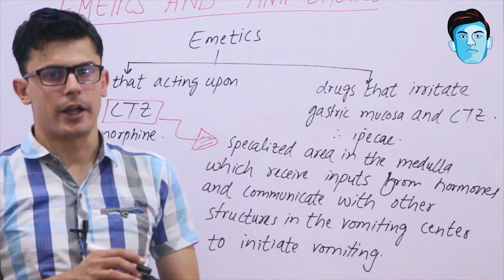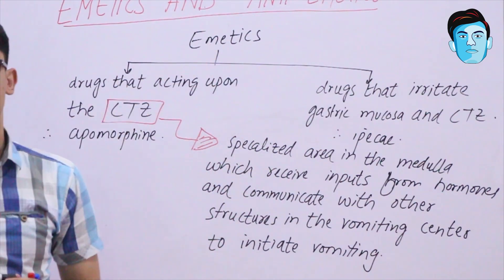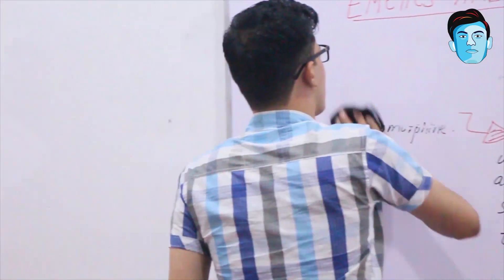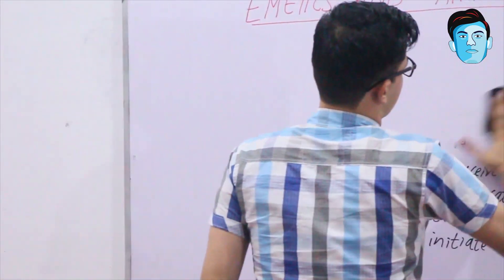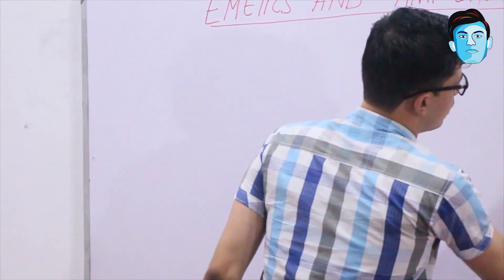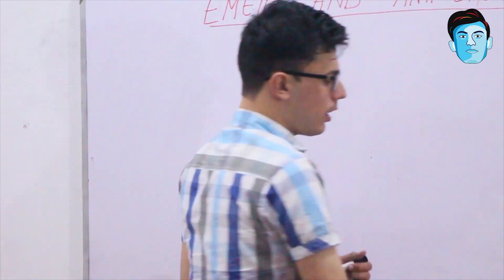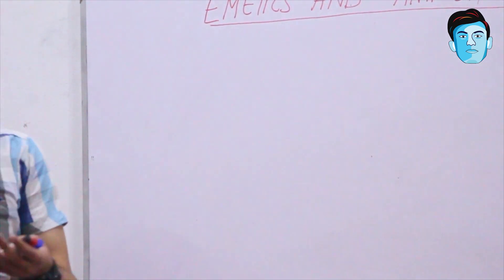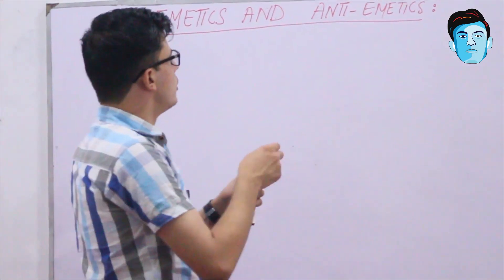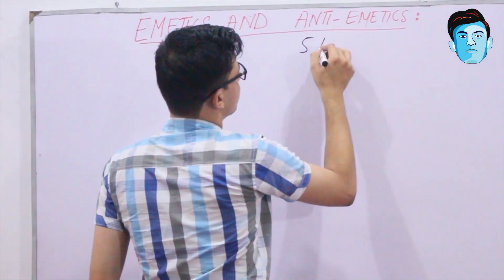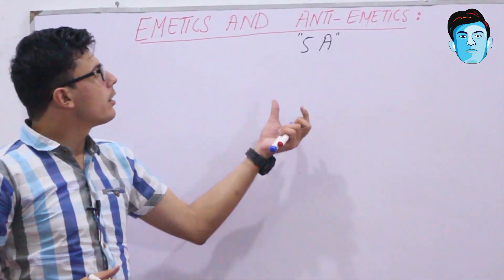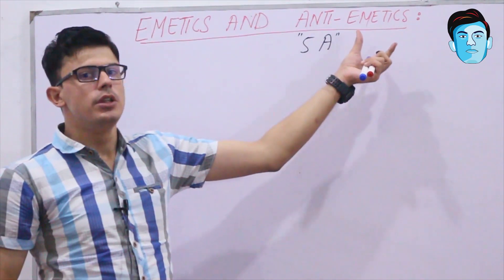Anti-emetics are the drugs that prevent vomiting — they do not allow vomiting to be induced. To recall the anti-emetic drugs, we use a mnemonic of five A's, representing five important classes of anti-emetics.